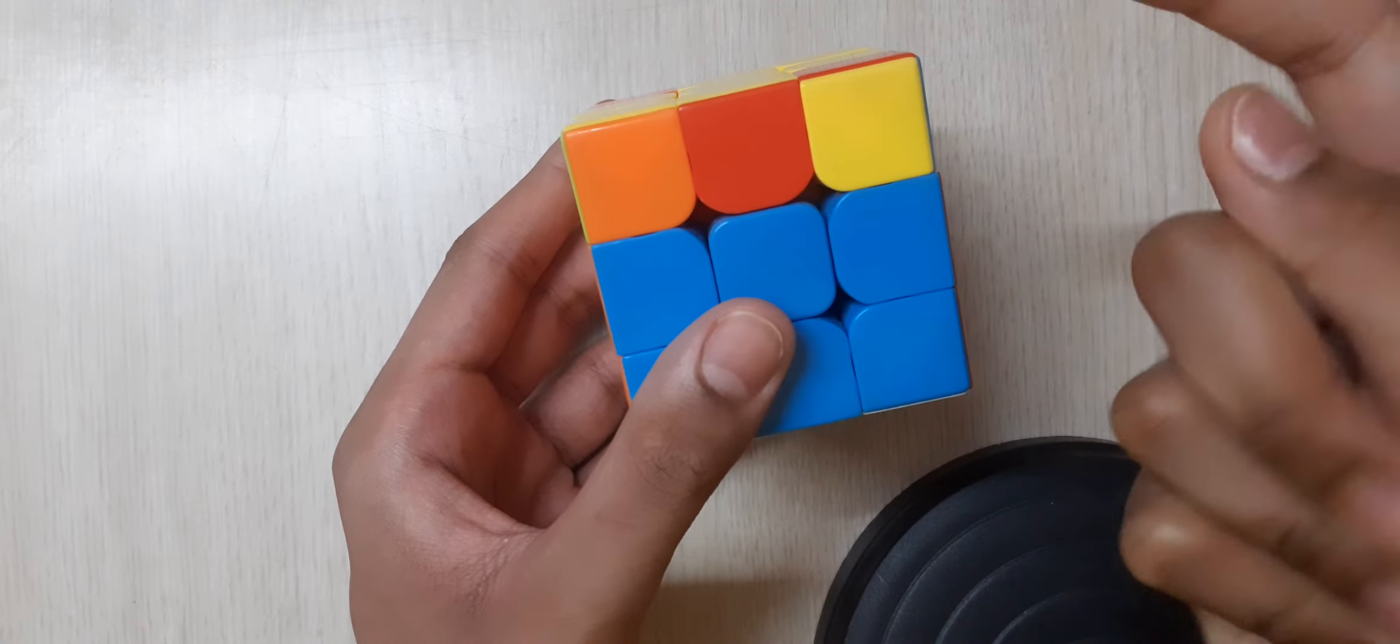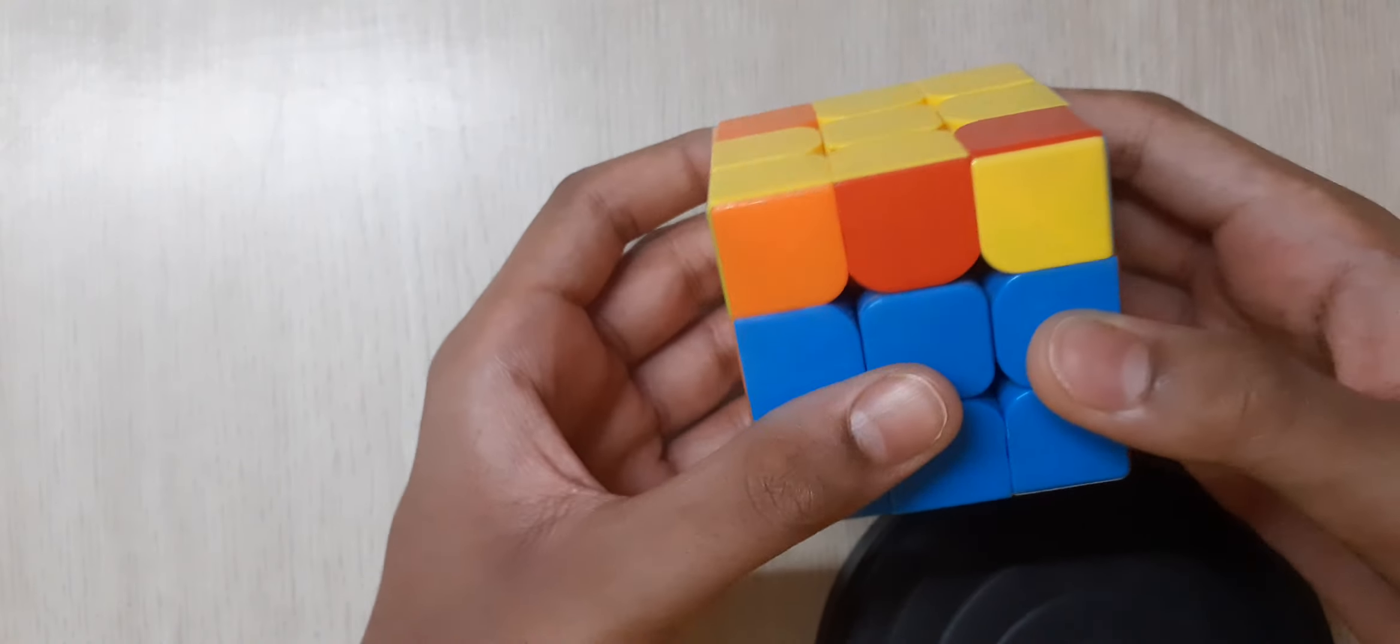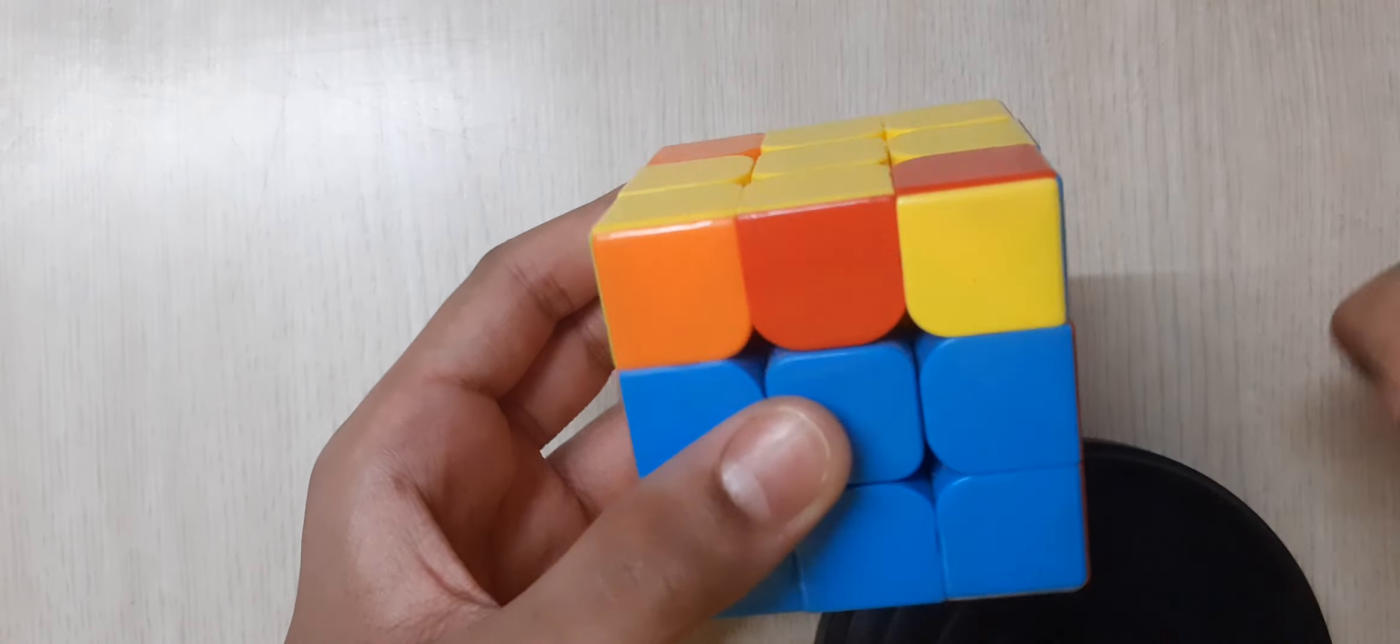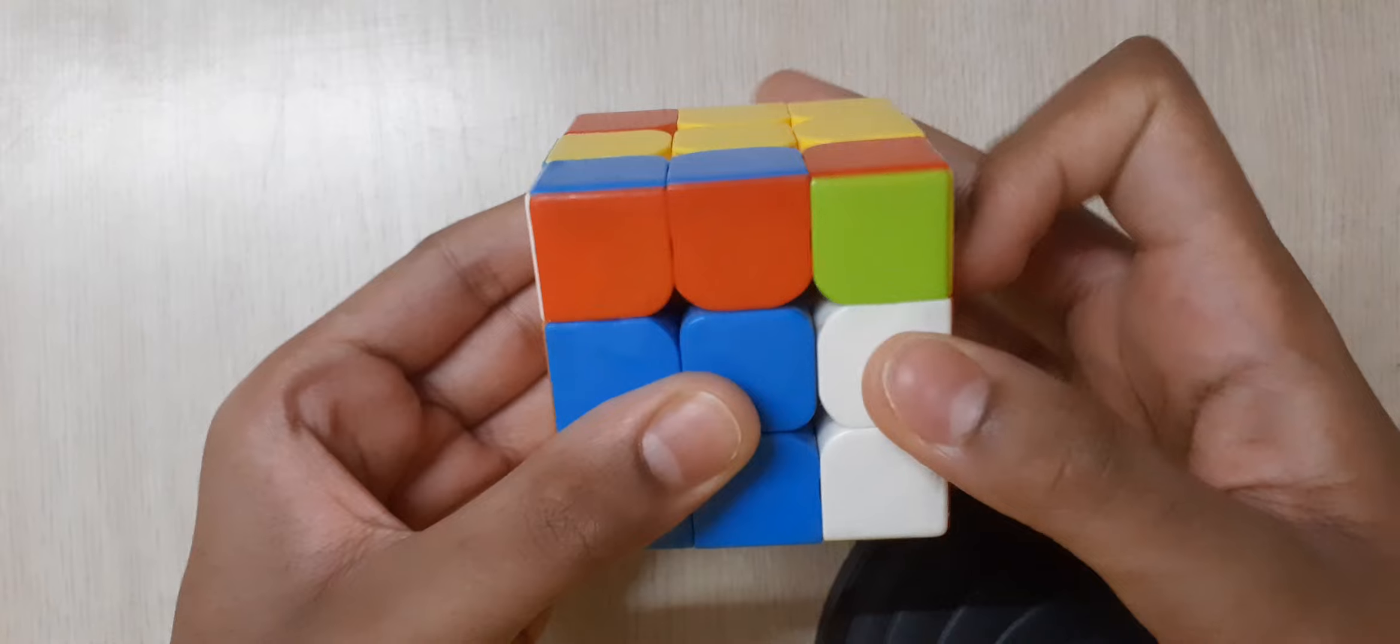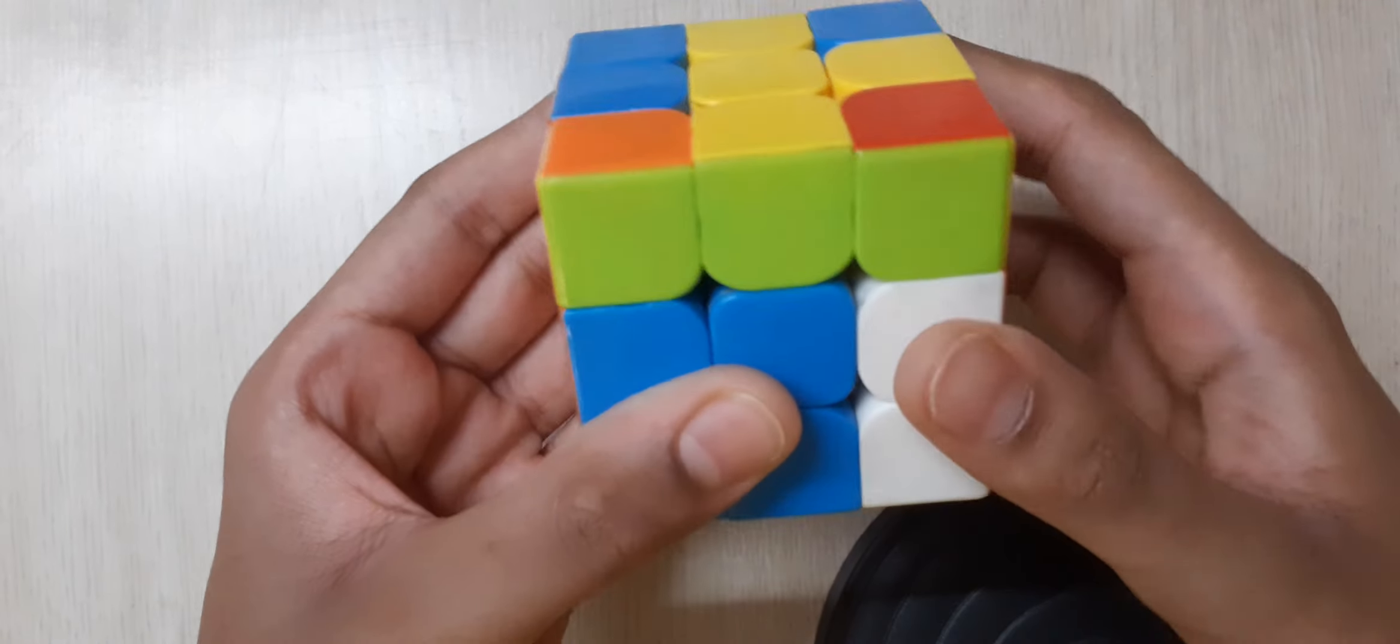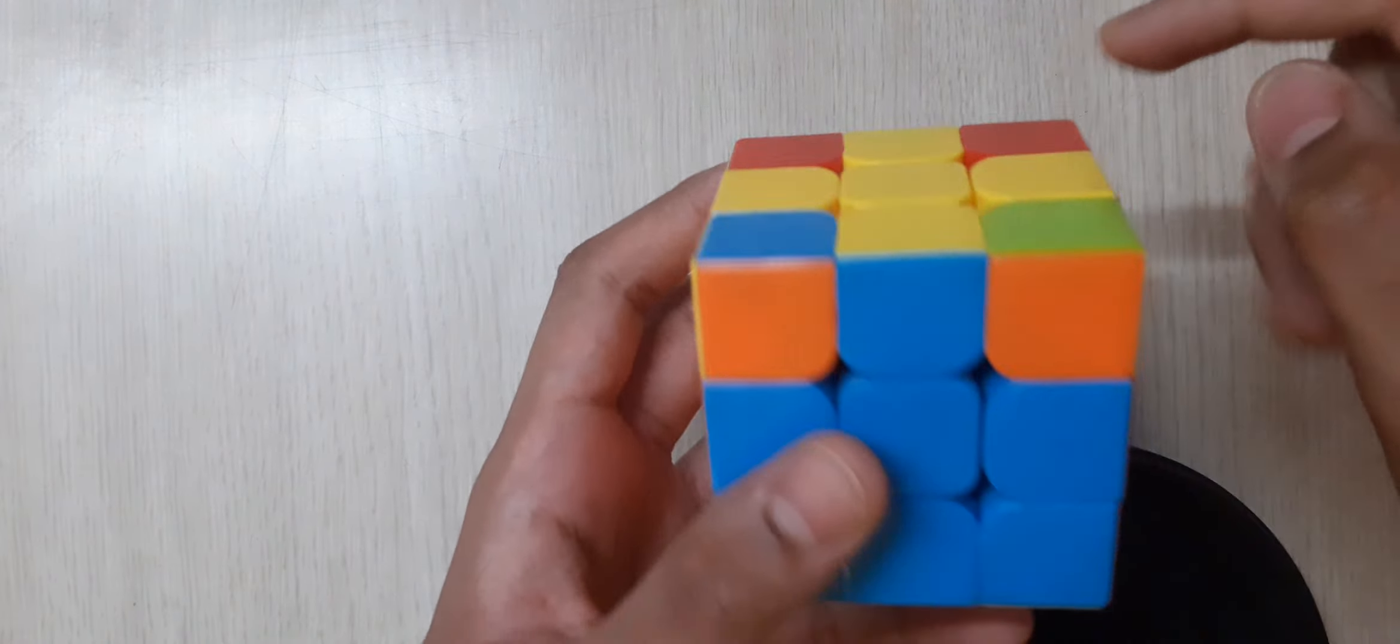First, you have to make sure that the color you want to swap is in your right, not on left. Now, do the algorithm that I do. First, turn up, right, down. Run two times and down. Then you will get the color on the correct sides.